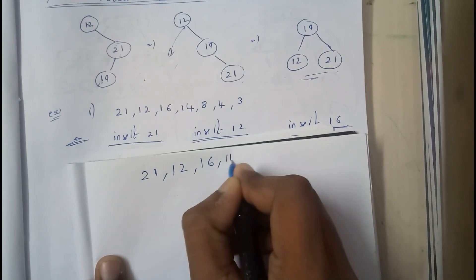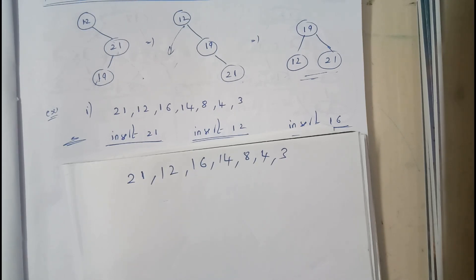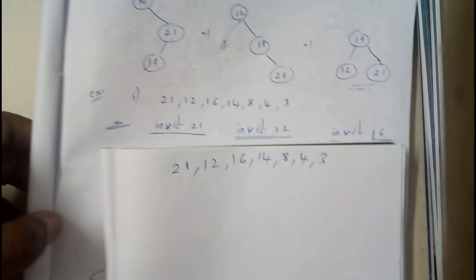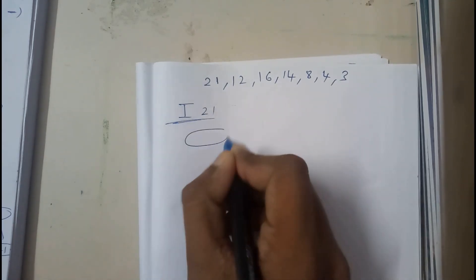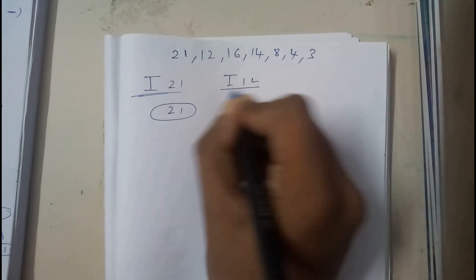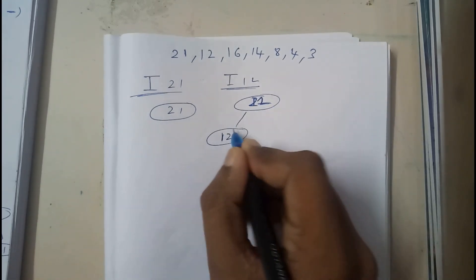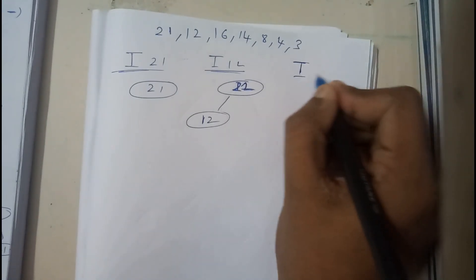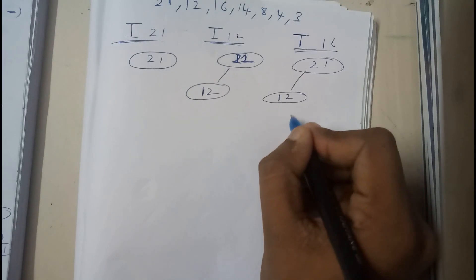Now it's time to construct an AVL tree. I'll be using 'I' for insertion. Insert 21 — place 21 directly. Insert 12 — 12 goes to the left of 21 according to binary search tree property. Insert 16 — 16 goes to the right of 12.